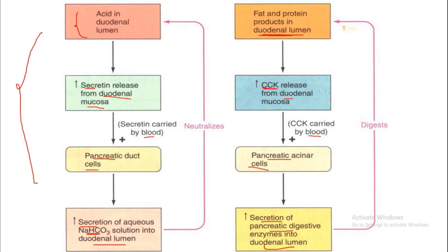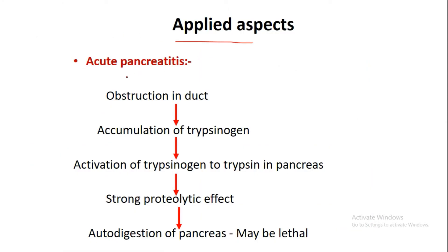Both hormones have different stimuli and different responses. Important GIT hormones to remember for short notes: gastrin, released from G cells of the stomach; secretin, released from S cells of the small intestine; and cholecystokinin, secreted from I cells of the small intestine. These three are the important GIT hormones. Now for the applied aspect — acute pancreatitis.